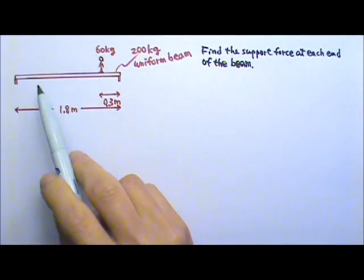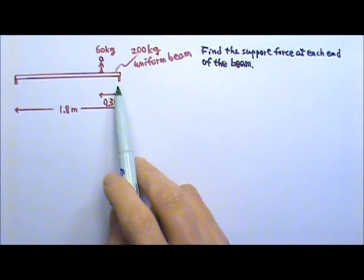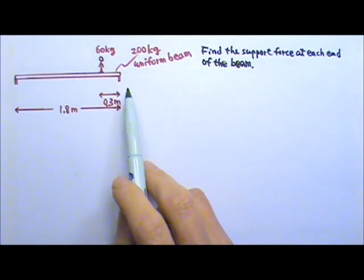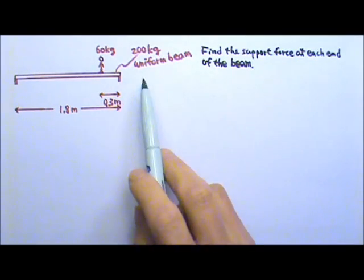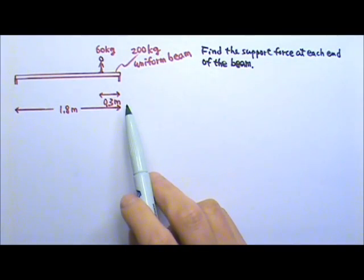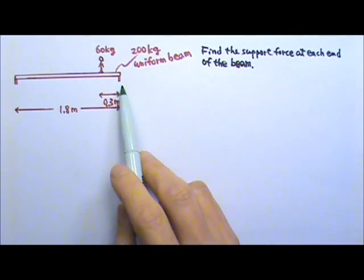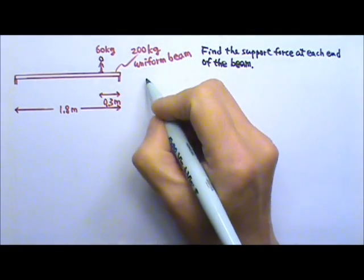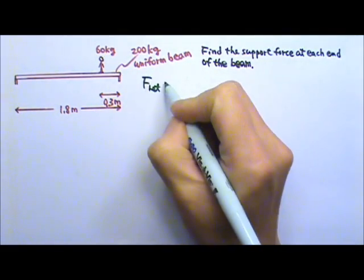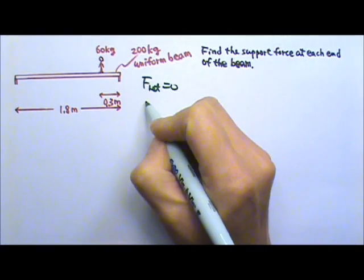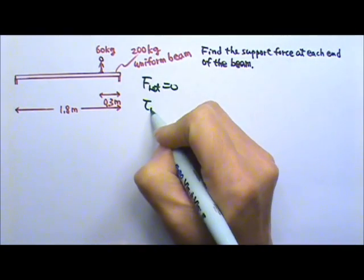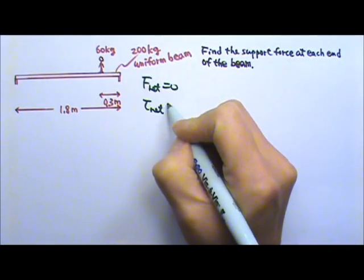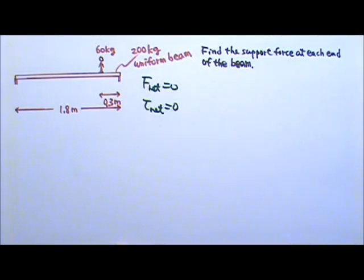The person and the beam are both staying at rest, so they are in static equilibrium, which means they satisfy the two conditions for equilibrium: the net force has to be zero, and the net torque also has to be zero.